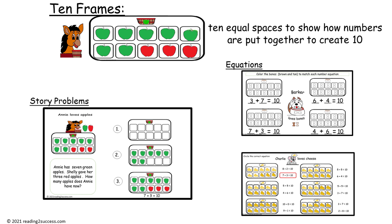Now, we see three steps. One—kids begin with a blank ten frame. For this story problem, step two would be kids add seven green apples. And then step three...